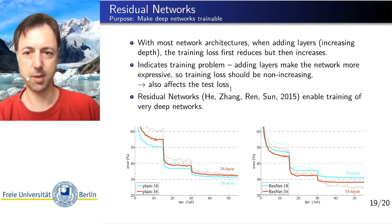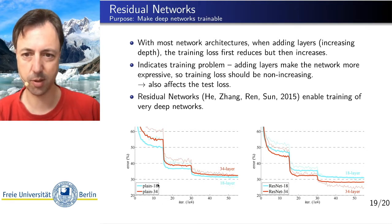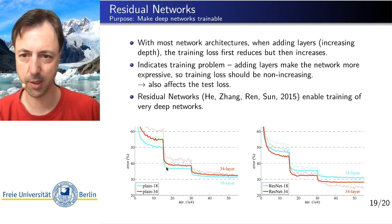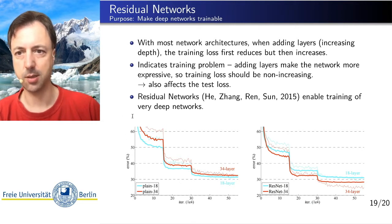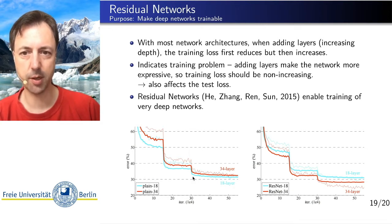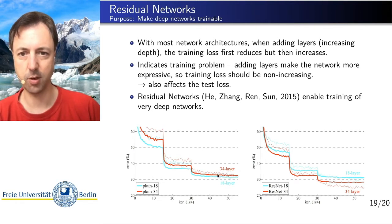Residual neural networks solve this problem — they make very deep networks trainable. Here is an illustration from the ResNet paper. This is what they call 'plain,' a non-residual neural network, which is a rectified linear unit network. You can see the training error curves as a function of the number of iterations. The key point is that the 18-layer neural network reaches a lower training error than the 34-layer neural network, and this should be the reverse: the 34-layer network should be more expressive, have lesser bias, and therefore a lower training error.